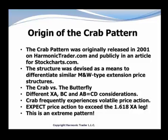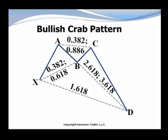Looking at crab pattern basics, we're examining an M or W type structure that possesses a B point ranging from a 0.382 to a 0.618 retracement of the XA leg. Remember from the butterfly, the butterfly had a 0.786 at its B point. For the crab, we allow a bit more variation — we're looking for any B point at or below a 0.618 of the XA leg. This establishes the BC extension measurements, which are usually extreme — typically a minimum 2.618, can be as much as a 3.618. These converge with the primary 1.618 XA extension to define sometimes a wide, but valid, structural completion point.